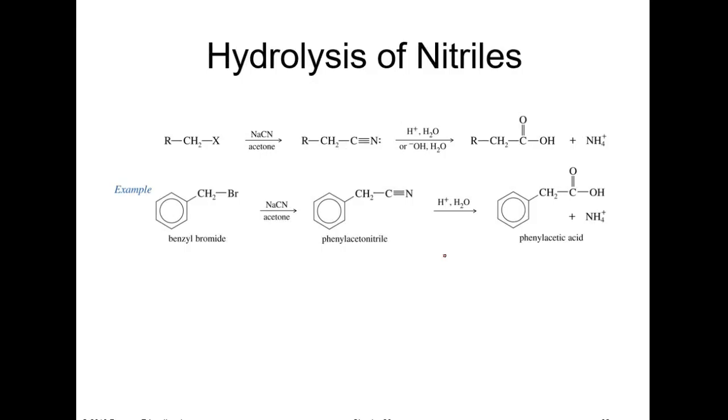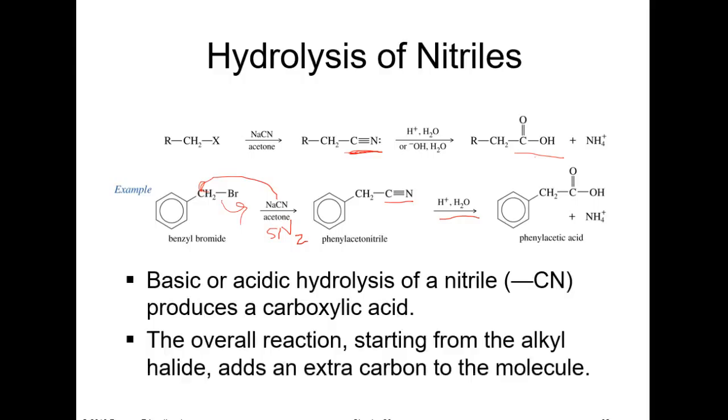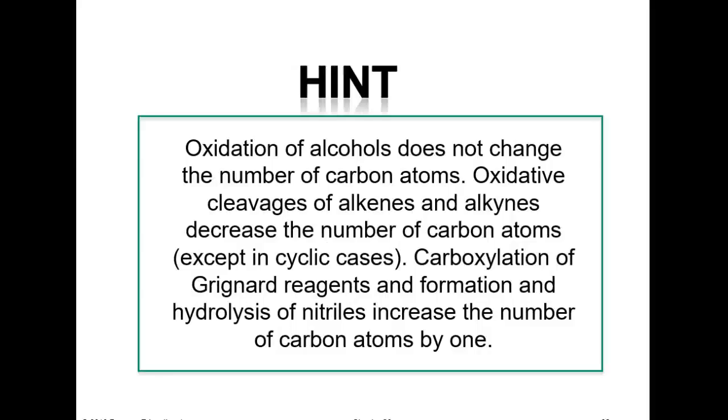Hydrolysis of nitriles. I think we learned this last chapter. If you have a nitrile right here, and if you add acid and water, we talked about the mechanism. It forms kind of like an imine, a hydroxy imine compound, which then gets hydrolyzed off to give you the carboxylic acid. Here's a synthesis. You're adding the carbon SN2 fashion. This is SN2 to give you the nitrile and then add acid and water to form the carboxylic acid. Basic or acidic hydrolysis of nitrile produces a carboxylic acid. The overall reaction, starting with the alkyl halide, adds an extra carbon to the molecule. Oxidation of alcohol does not change the number of carbon atoms. Oxidation or cleavage of alkenes and alkynes decrease the number of atoms. Carboxylation of Grignards and nitriles add a carbon. Depending on what you want to do—if you want to add carbons, take away carbons, or not change carbons—that will tell you which reaction you would want to do.